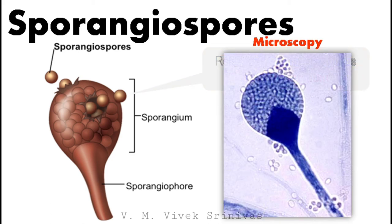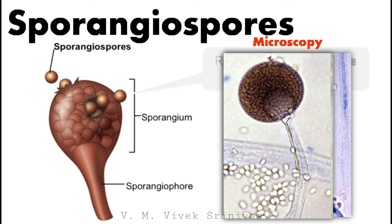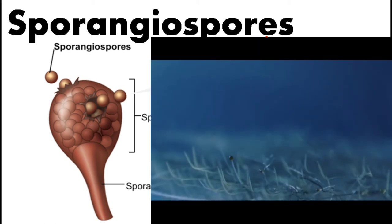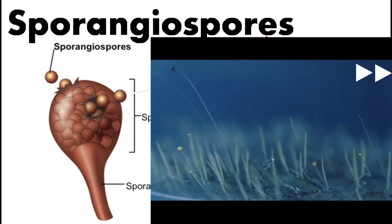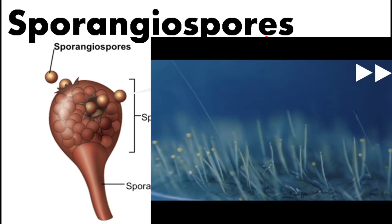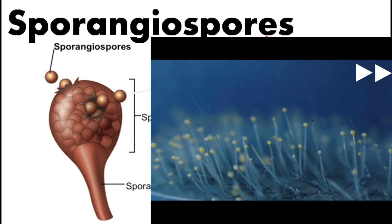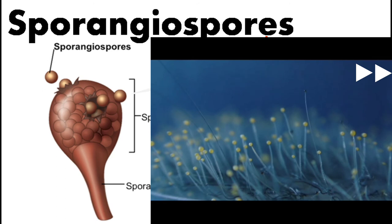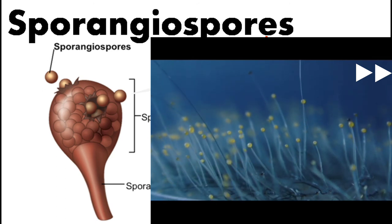This is a microscopy image showing the sporangium which carries hundreds and thousands of sporangiospores in it. Another microscopy image showing the sporangium encasing the sporangiospores. This is a fast-forwarded video. You can notice a round-shaped structure called sporangium at the end of aerial hyphae. This sporangium encases sporangiospores.